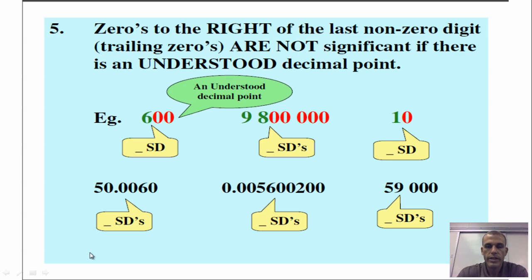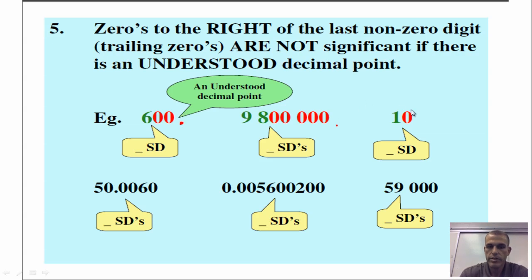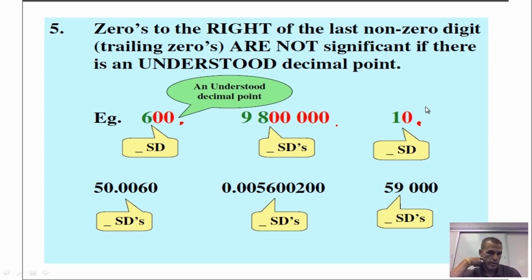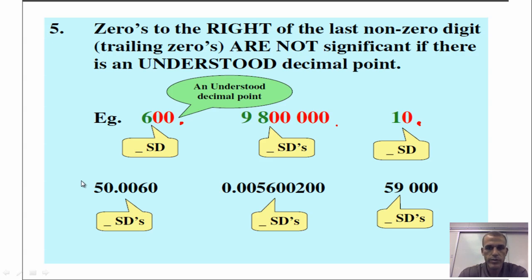Rule number five: zeros to the right of the last non-zero digit — trailing zeros — are not significant if there is an understood decimal point. For example, 600: it's understood there's a decimal there, and the same applies to the other examples. The color coding makes it clear — green is significant and red is non-significant. Take a second and figure out the bottom ones, since they're written a little differently.